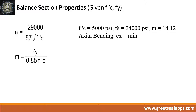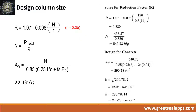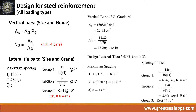Given: FC' equals 5,000 psi, Fs equals 24,000 psi, Fy equals 60,000 psi. The balance section properties are as follows: N equals 7.195, M equals 14.12. The reduction factor is 0.83 and the nominal load is 546.23 kips. The gross area of column is 290.78 square inches. The column width is 14 inches and column length is 22 inches. Given AG equals 308 square inches.